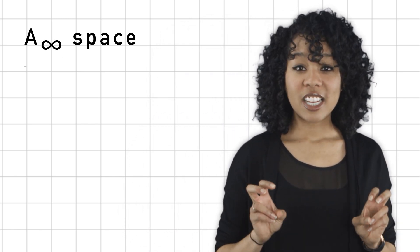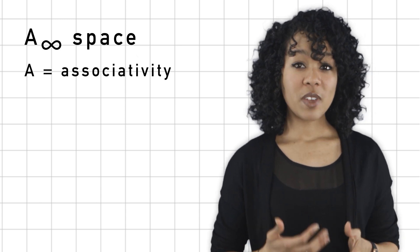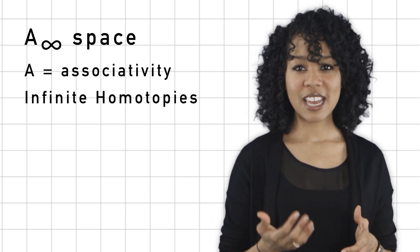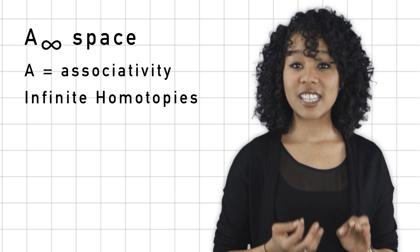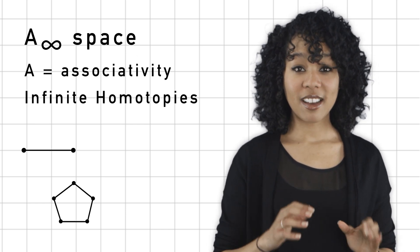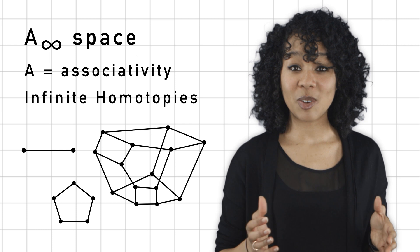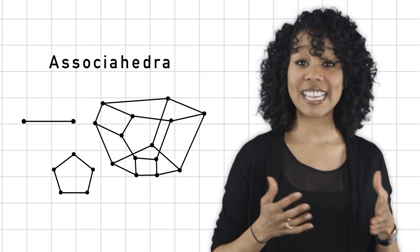And you know the story doesn't stop at five. It goes on forever, literally. The set of all loops that start and stop at the same point in a topological space, like a donut, form what's called an A infinity space. The A stands for associativity, and the infinity reminds us of the eventually infinite string of homotopies. And the sequence of shapes that we get, a line segment, a pentagon, a polyhedron with nine faces, and so on, are called the associahedra.